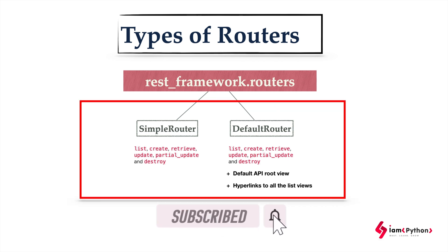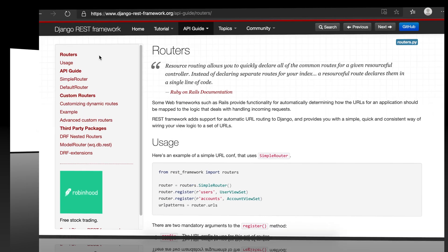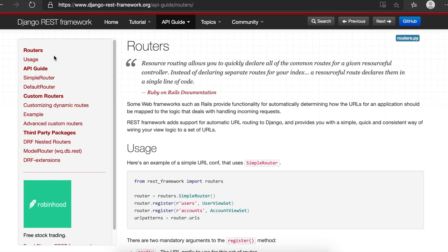Just remember there are only two important routers: SimpleRouter and DefaultRouter. These are available in the REST framework routers. SimpleRouter has list, create, retrieve, update, and partial update, and DefaultRouter has the same but with the additional hyperlinks. Let's look at a simple example to get some idea.